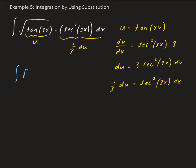So we have the integral of the square root of u times one-third du. Now everything is in terms of du, so we can go ahead and take the integral. I'm going to take out a one-third, so we have one-third times the integral of square root of u du.